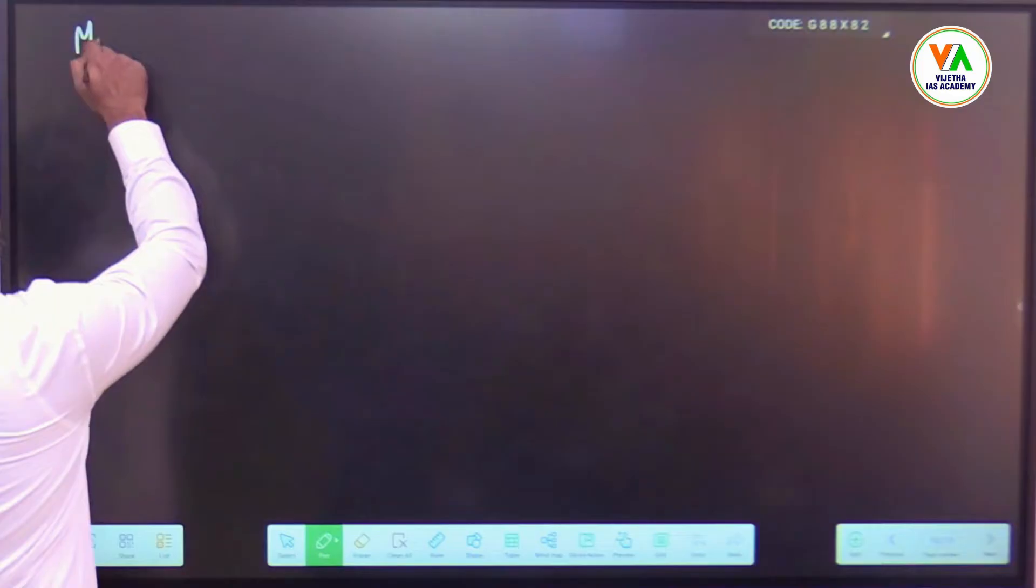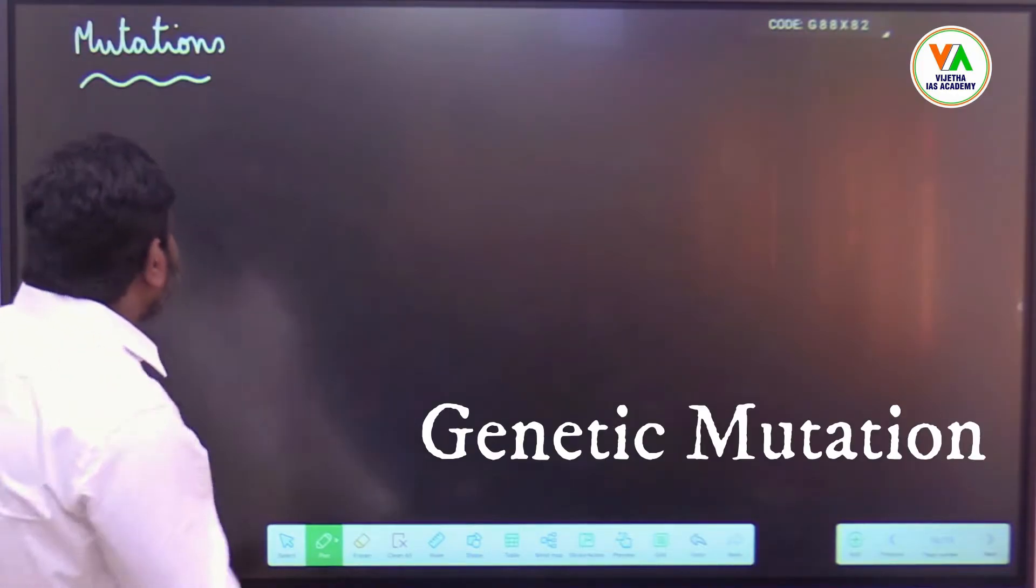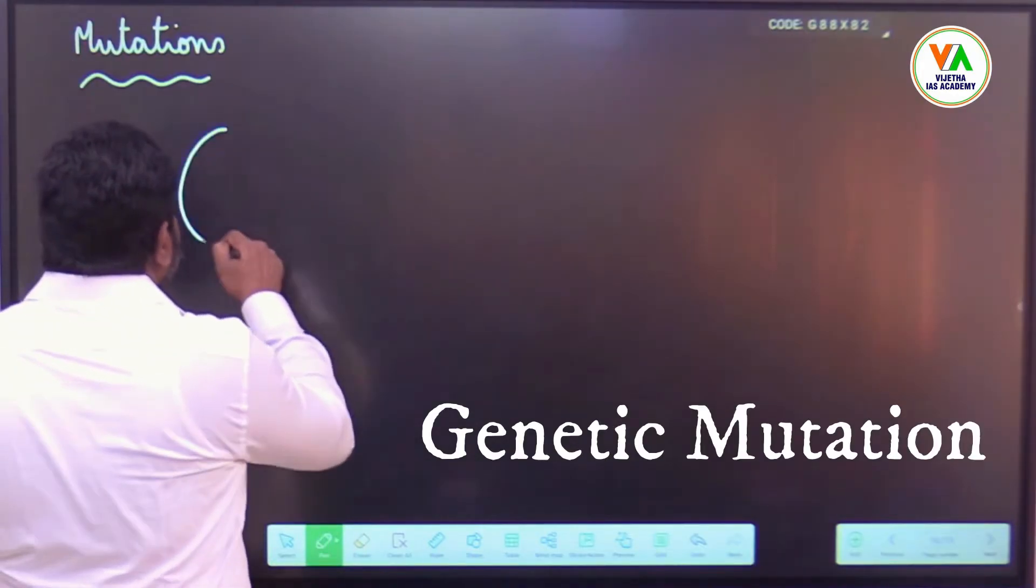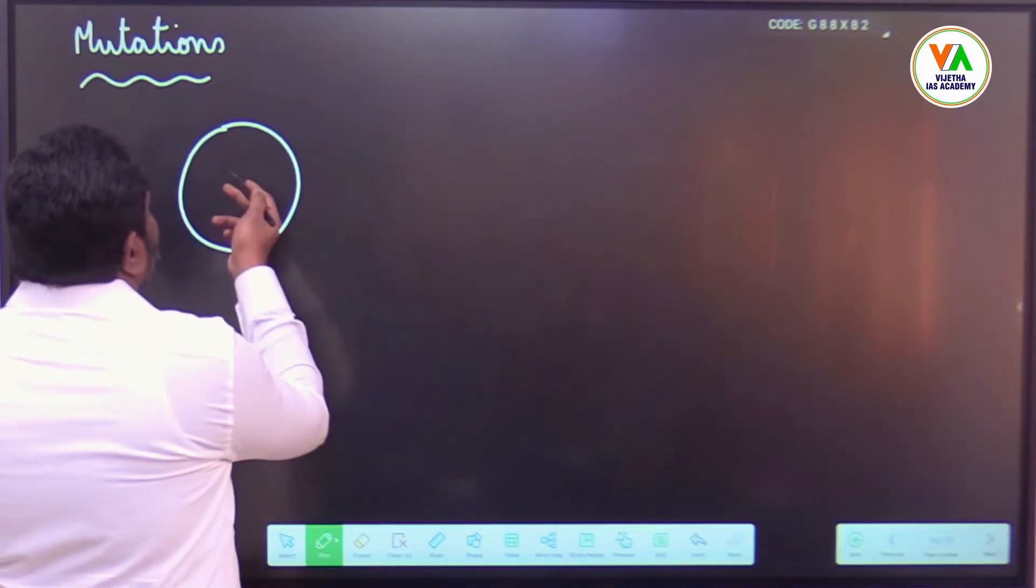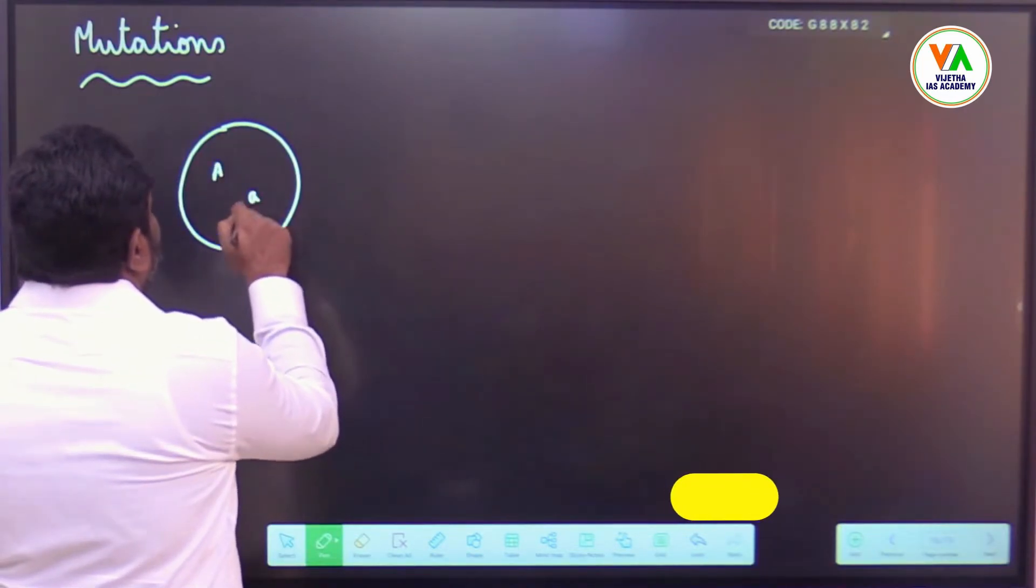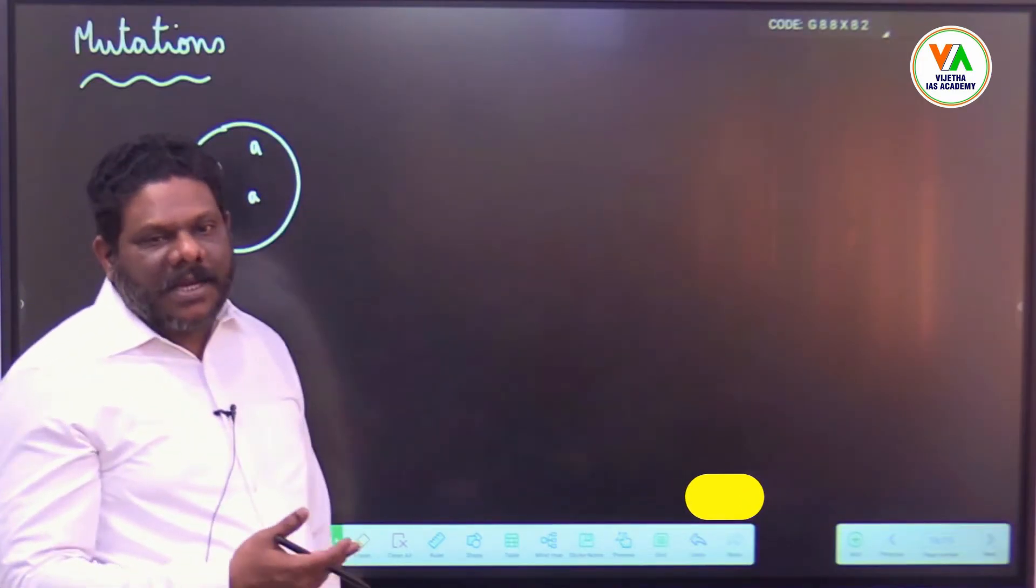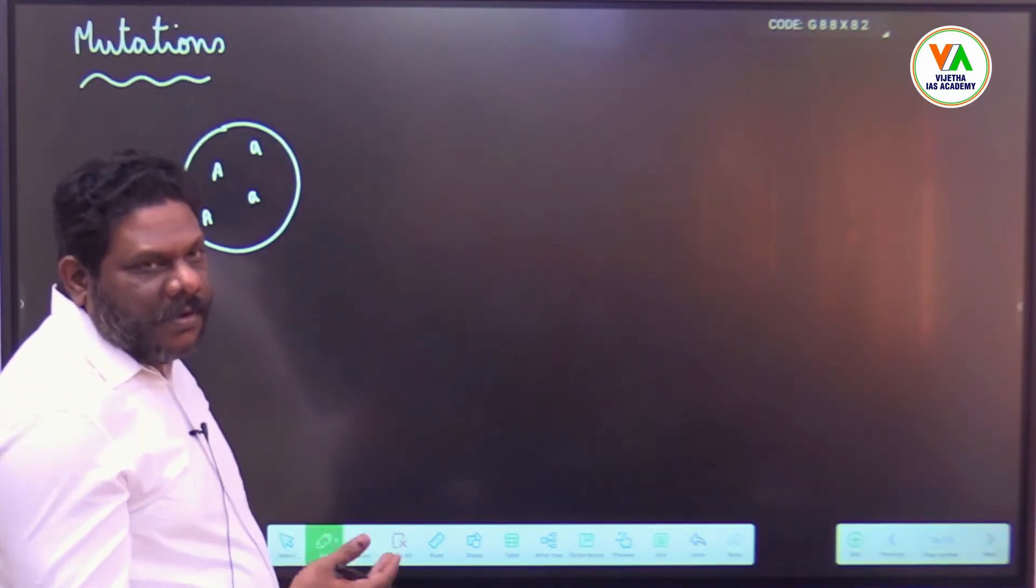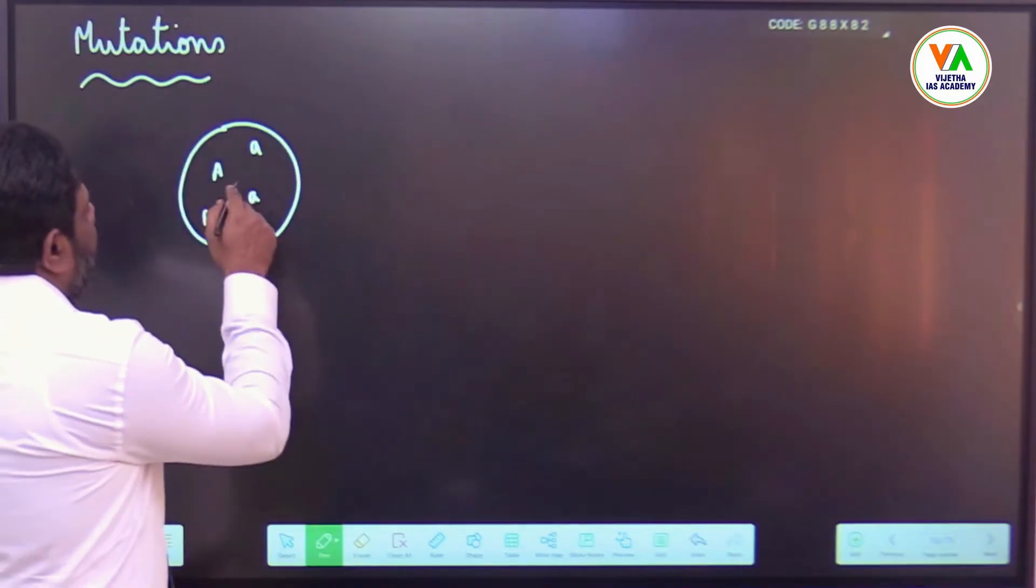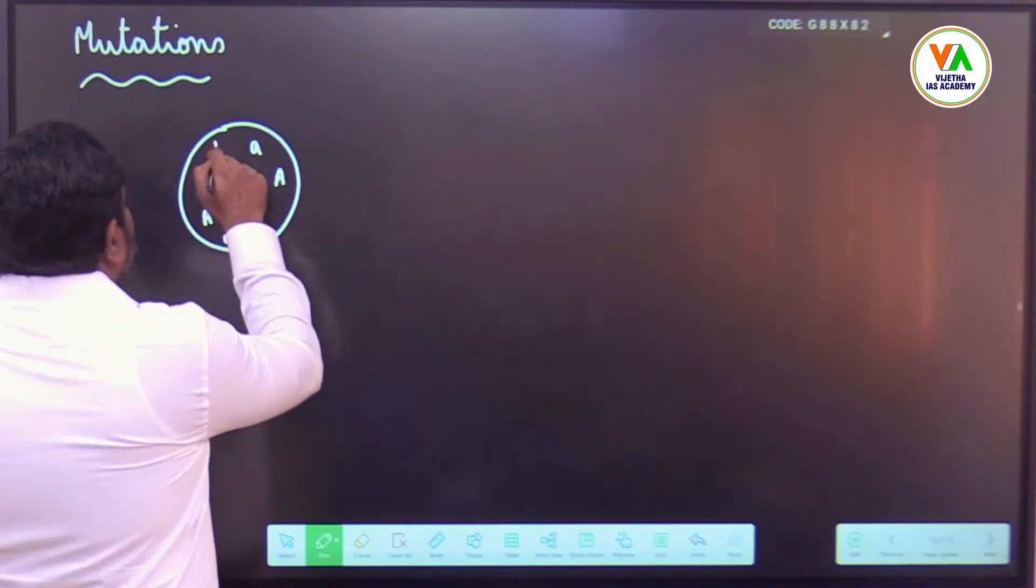Starting from mutations now, listen. Say for example this is a population group, maybe with capital A alleles and the genotypes capital A capital A. You know we are taking capital A and small a as alleles.